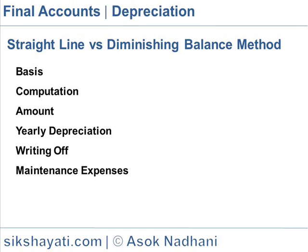Writing off: In the straight line method, if the estimated salvage value is nil, the asset is fully written off. In the diminishing balance method, the asset is not fully written off.